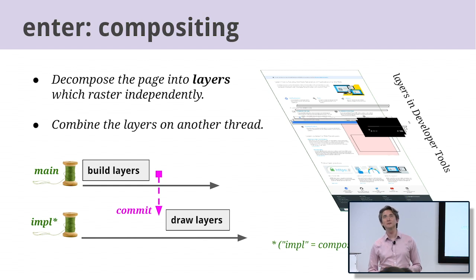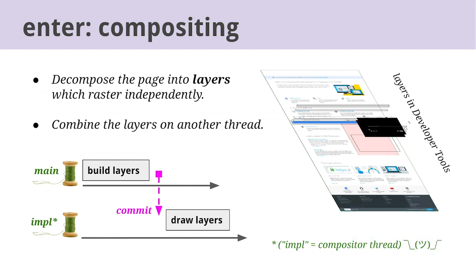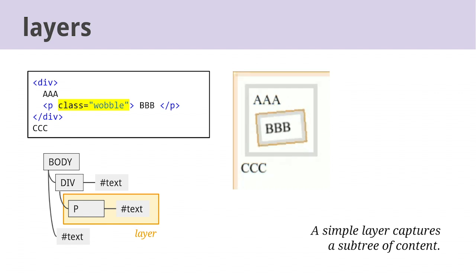This sets the stage for an optimization called compositing. The compositor introduces two fundamental ideas: break the page into layers and combine them on another thread. A layer is like a piece of the web page that can be transformed and rastered independently of the other layers — if you've ever played with layers in Photoshop, it's a little bit like that. DevTools gives you a 3D view of the layers, and you can see that we're building them on the main thread and sending them off to another thread called Impl. Impl means compositor thread for reasons that are obscure and historical.